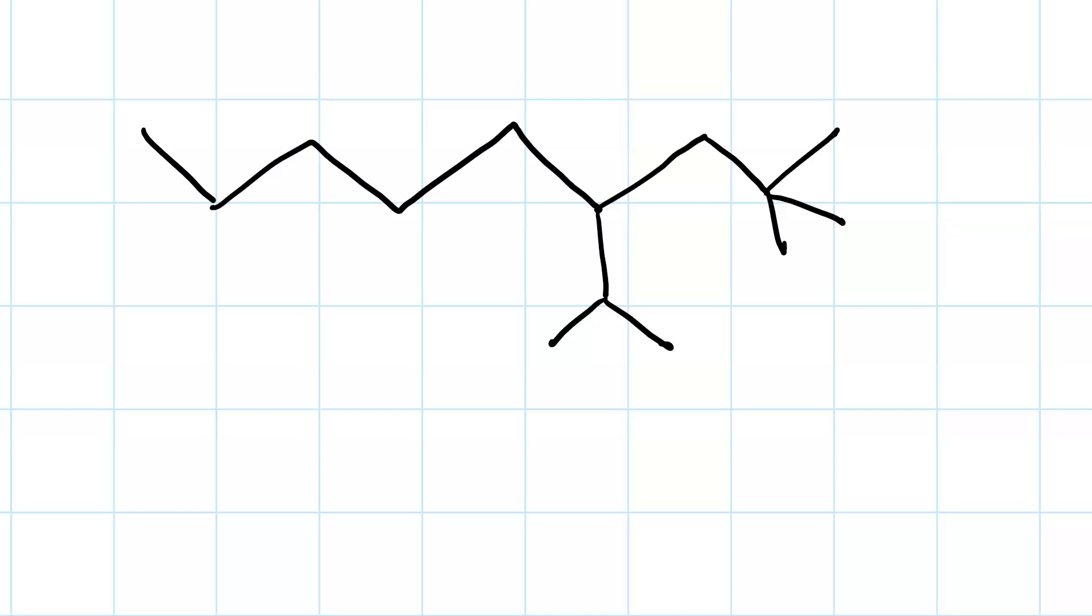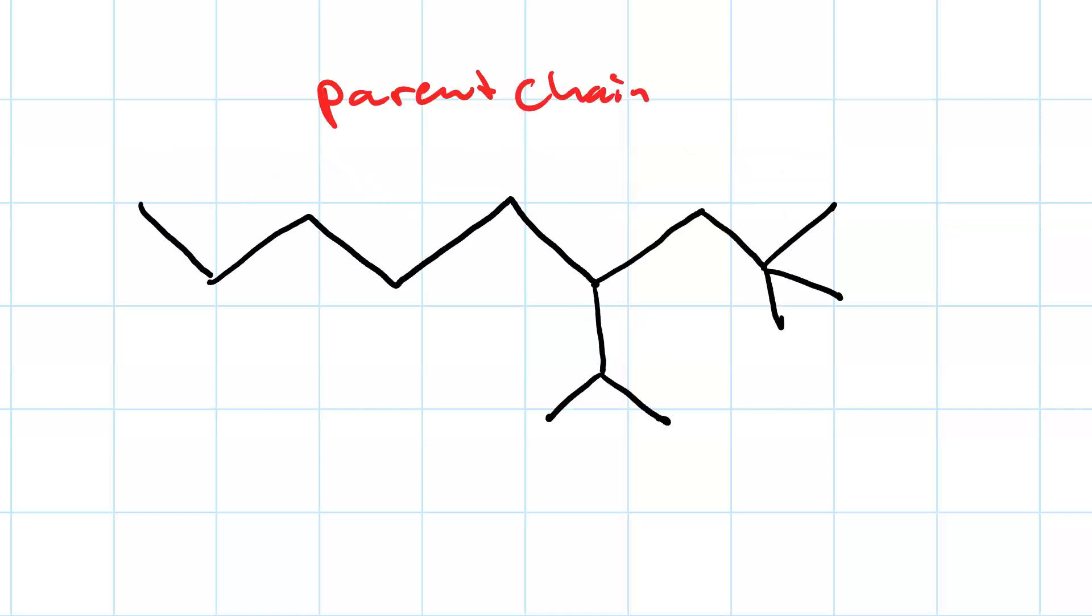Enough about complex substituents. So say we wanted to name this. The first thing we do is we identify the parent chain. So we start counting carbons. One, two, three, four, five, six, seven, eight, or seven, eight, nine. So, in this case, the parent chain is nonane because it's got nine carbons.